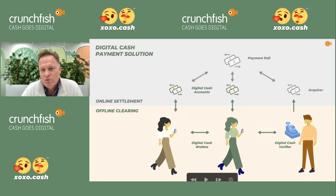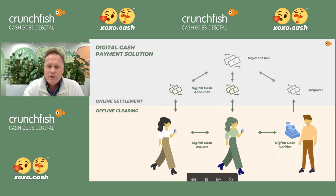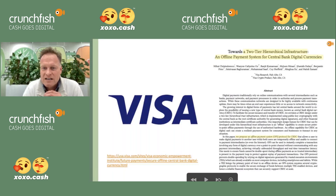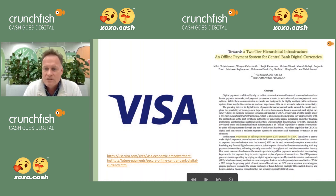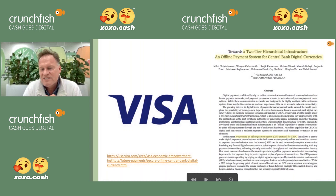We split the payment process into two steps — that is really one of the key aspects. We were very happy that Visa came up with the very same idea. They presented a research paper in December last year describing a two-tier hierarchical structure: first an offline clearing, then an online settlement — exactly what we've been saying for over a year. Their paper describes that for CBDC, payment should be viewed as a two-step process.